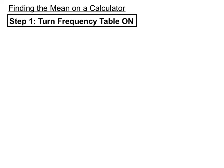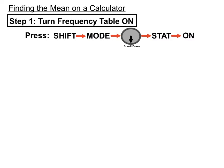To turn the frequency table on, press SHIFT then MODE, then scroll down using the replay button which is the arrow button in the top middle of your calculator. Scroll down until you're able to select STAT on the screen, then press ON.